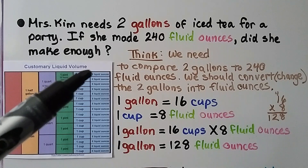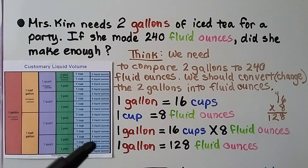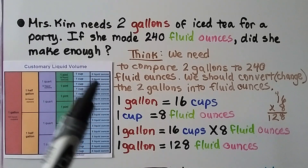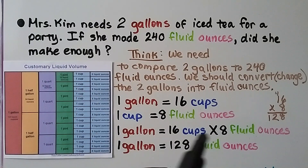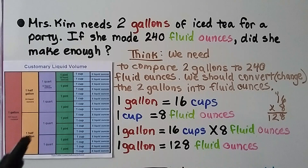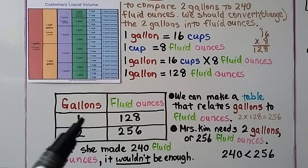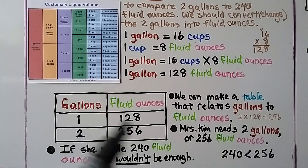One gallon equals 16 cups — counting one through sixteen. If each cup is eight ounces, we do 16 times eight, which gives us 128. So one gallon is 128 fluid ounces. She needs two gallons, so we make a table: one gallon is 128 fluid ounces, and two gallons is two times 128, which is 256 fluid ounces.